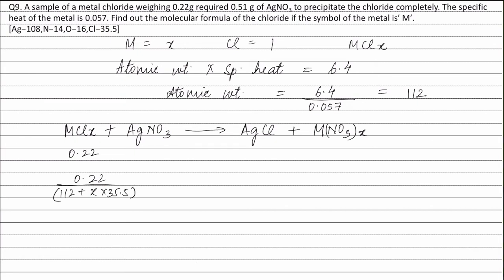Weight of silver nitrate is 0.51 gram. Therefore, moles of silver nitrate is weight of silver nitrate divided by molecular weight of silver nitrate, that is 0.51 divided by 170.